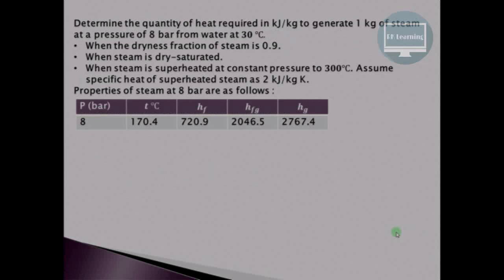Now in the next example, we have to find the heat required in kJ/kg to generate 1 kg of steam at a pressure of 8 bar from water at 30°C. There are three conditions: when the steam is wet with a dryness fraction of 0.9, when the steam is dry saturated, and when the steam is superheated at constant pressure to 300°C. The specific heat of superheated steam is assumed to be 2 kJ/kg·K. The properties of steam at 8 bar are given in the table.